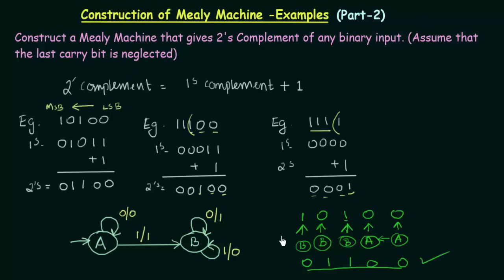We have successfully designed the Mealy machine that takes any binary input and gives the 2's complement of that binary input as the output. You can take the other examples and check — you will see that it is working fine. I hope this example was clear to you. Thank you for watching and see you in the next one.